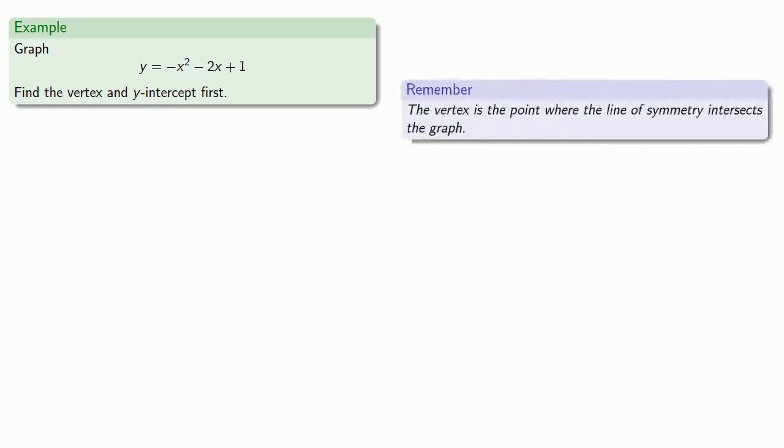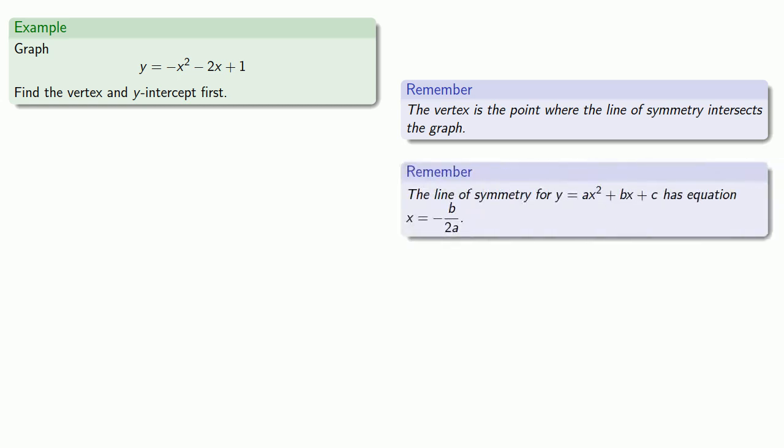Remember, the vertex is the point where the line of symmetry intersects the graph. The line of symmetry for y = ax² + bx + c has equation x = -b/2a.